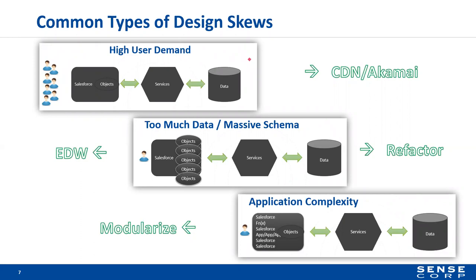If you're not prepared and ready for instant demand and scale, and that's part of your value generation, you need to be ready for that in your design. Other types of design skew include too much data, too many objects, or a massive schema — you might want to look at enterprise data warehousing or refactor the application or data schema. Or application complexity — you may need to modularize it. If deploying code means everything breaks, that's a classic skew type most people are at least casually familiar with.